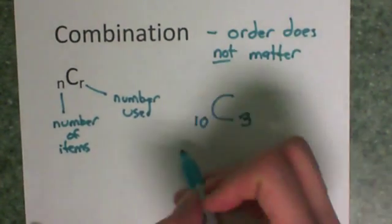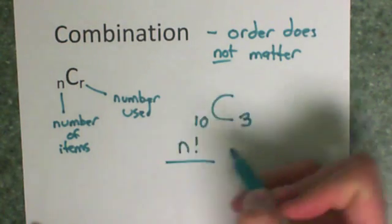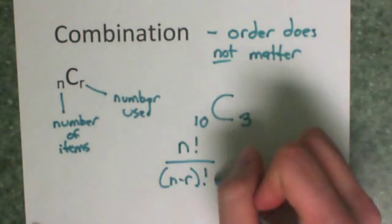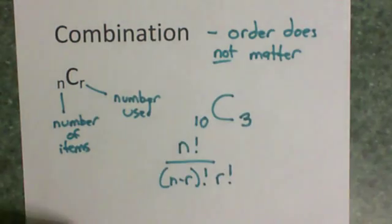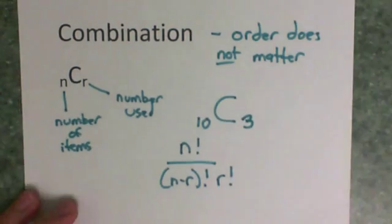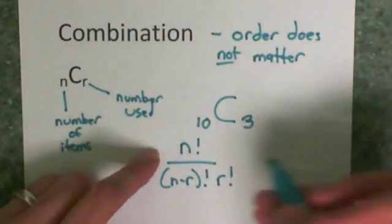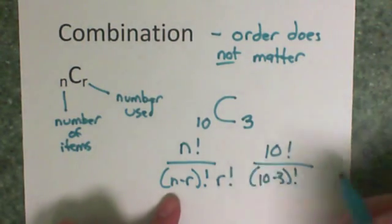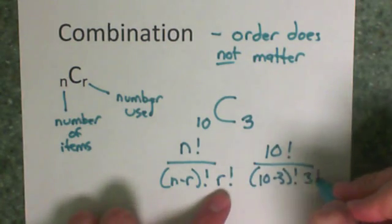On this one, our formula to plug in is N factorial over (N minus R) factorial, so so far the same. But then we add an R factorial on there. And what that does is it gets rid of the duplication that exists when order doesn't matter. If I plug in these numbers, that's going to be ten factorial over ten minus three factorial and another three factorial.